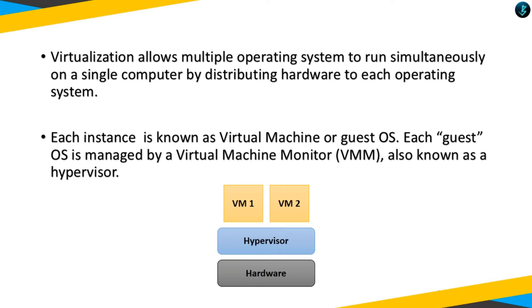Virtualization allows multiple operating systems to run simultaneously on a single computer by distributing hardware to each operating system. Each instance is known as a virtual machine or a guest operating system. Each guest operating system is managed by a virtual machine monitor, also known as a hypervisor.